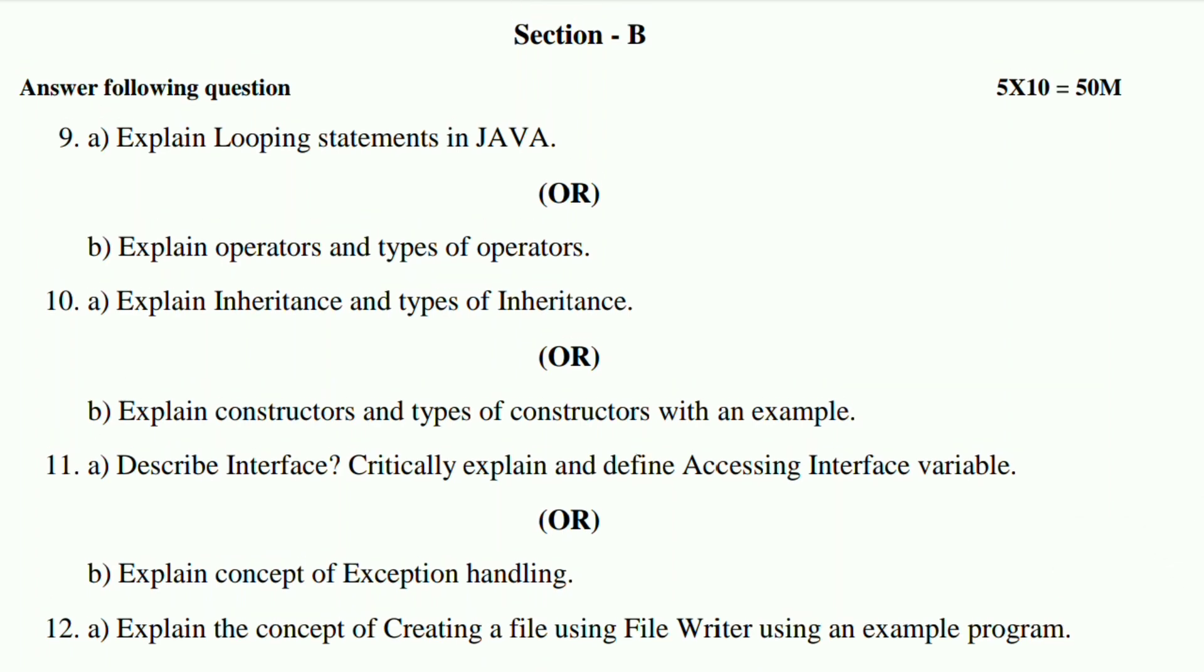Ninth question: explain looping statements in Java. When you have to assess the short questions, you have to prepare accordingly. Ninth B: explain operators and types of operators. Tenth A: explain inheritance and types of inheritance. Tenth B: explain constructors and types of constructors with an example. You have to add the types and explain, or you choose one of two sets of results. Many times they require these explanations or types of inheritance.